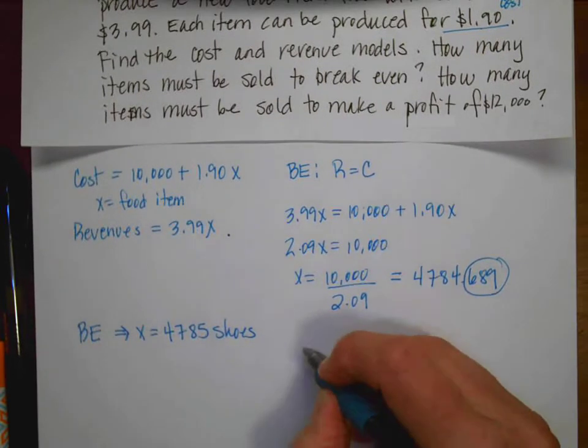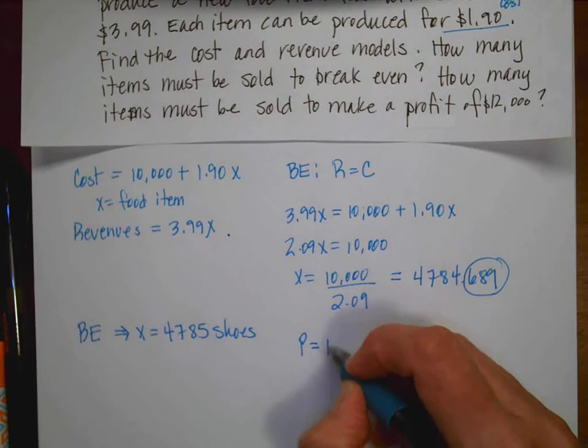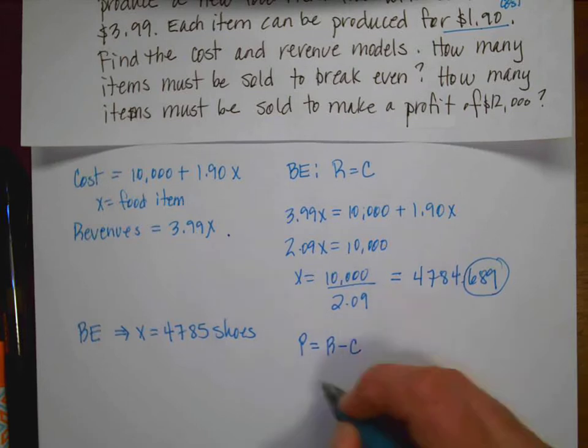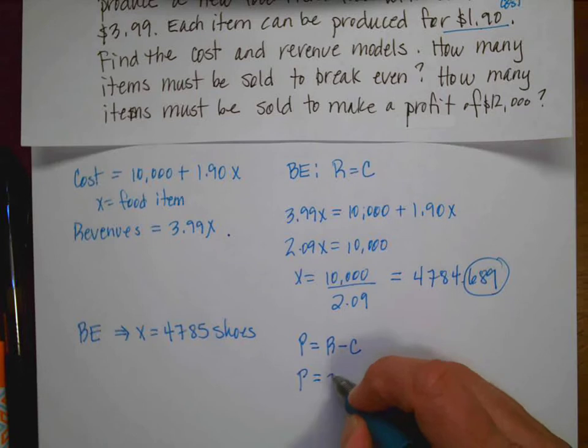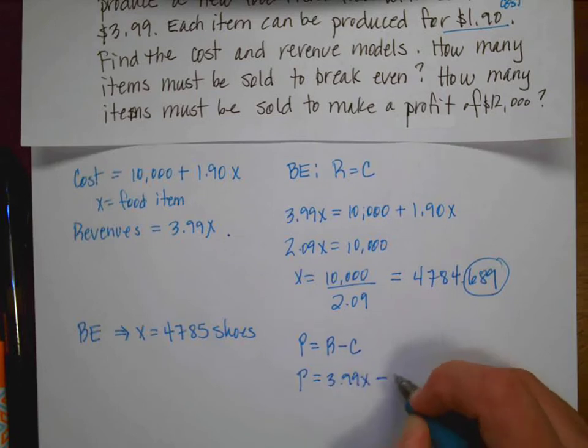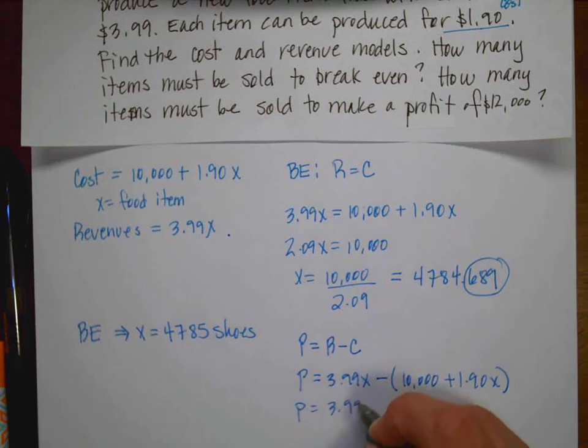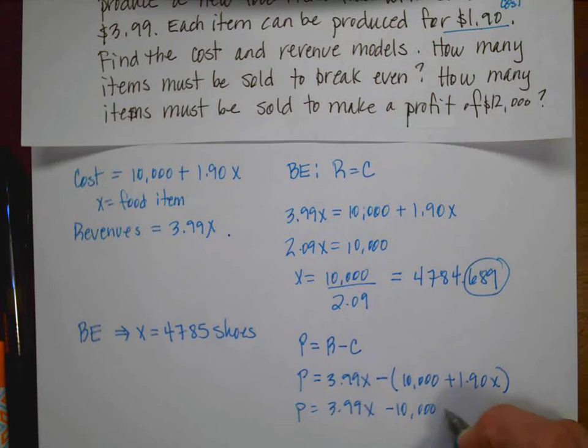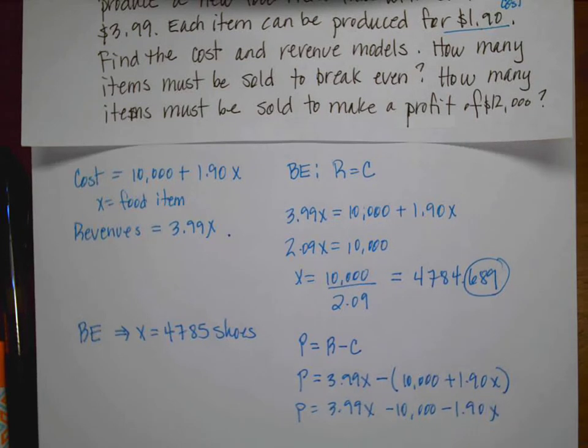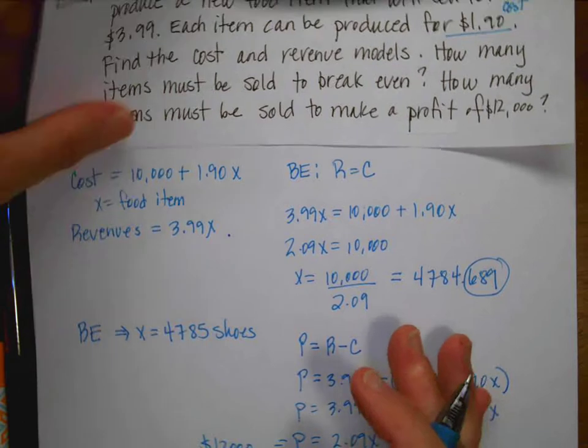The second question said, I need a profit of $12,000. So remember that profit is equal to revenue minus cost. So my profit is going to equal my revenue 3.99X minus the cost, which is $10,000 plus $1.90X. So my profit is 3.99X minus $10,000 minus $1.90X. So when I combine like terms, profit is 2.09X minus $10,000.